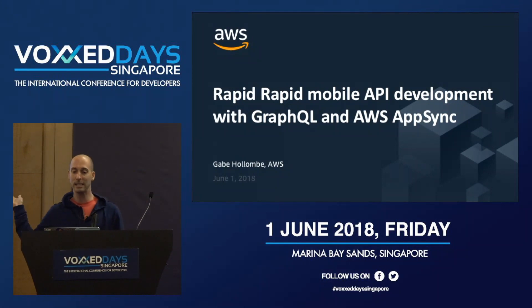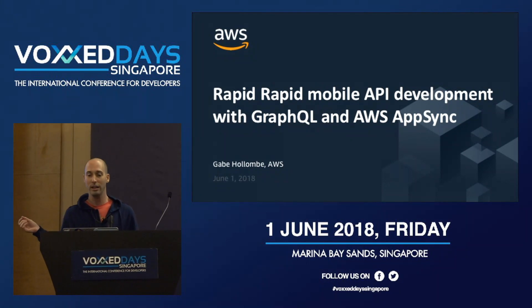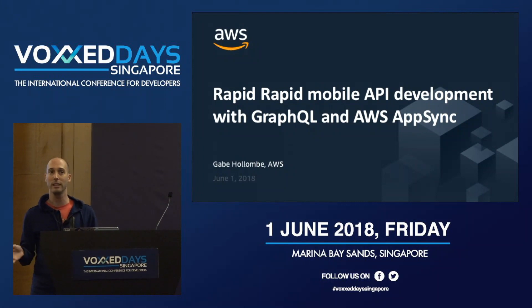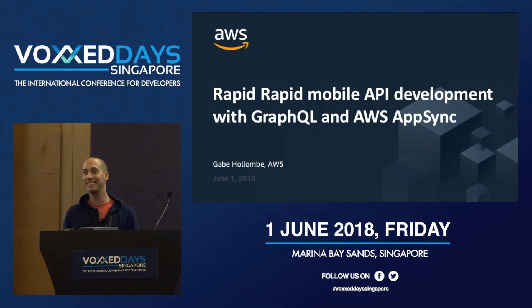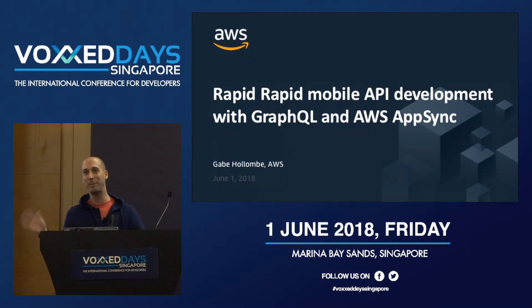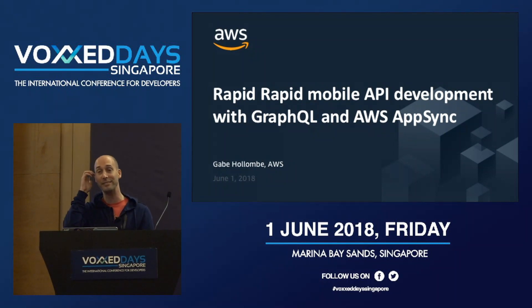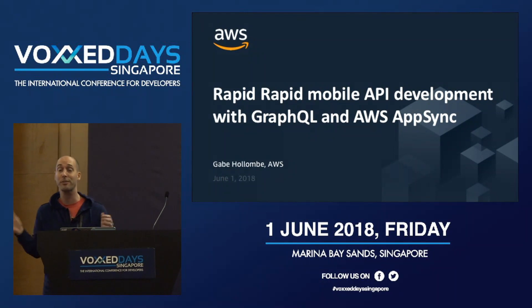Before we get started, hands up if you've used GraphQL before. Used or heard of AWS AppSync? And last one, how many of you are hoping to learn something about graph databases today? The first thing you're going to learn is that GraphQL has nothing to do with graph databases — at least not intrinsically. Despite the name, which I can understand why it might be confusing, it has nothing to do with graph databases, although you can use graph databases with GraphQL. It's not for querying graph databases explicitly.